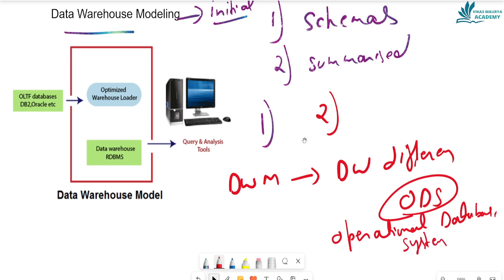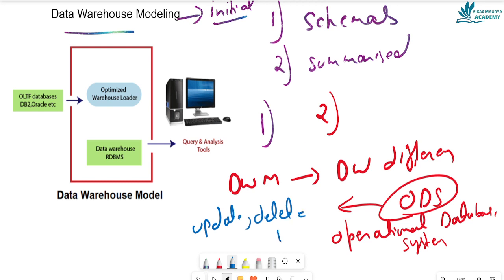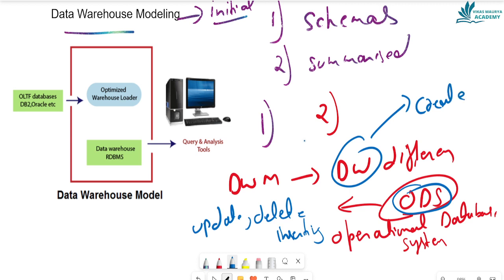The ODS, or Operational Database System, is different because it is frequently updated — operations include Update, Delete, and Insert. However, in a data warehouse, operations are performed differently, using software-based batch loading rather than continuous transactional updates. That is why the data warehouse is different from ODS.